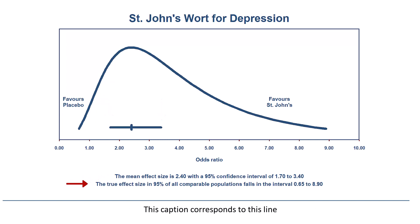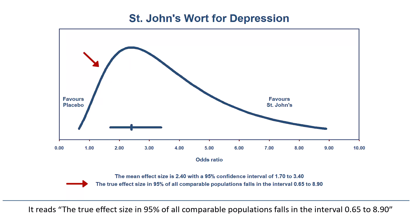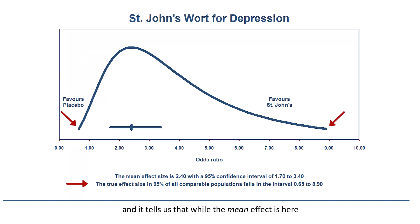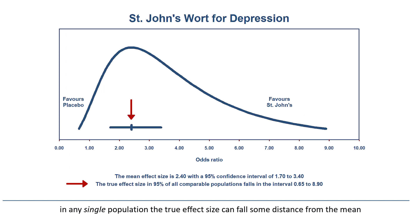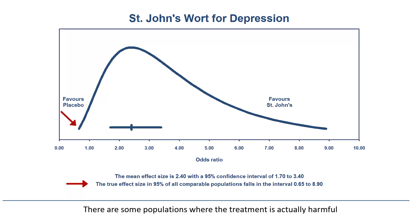This caption corresponds to this line. It reads: the true effect size in 95% of all comparable populations falls in the interval 0.65 to 8.9. It tells us that while the mean effect is here, in any single population, the true effect size can fall some distance from the mean. There are some populations where the treatment is actually harmful, and some where it is extremely helpful.